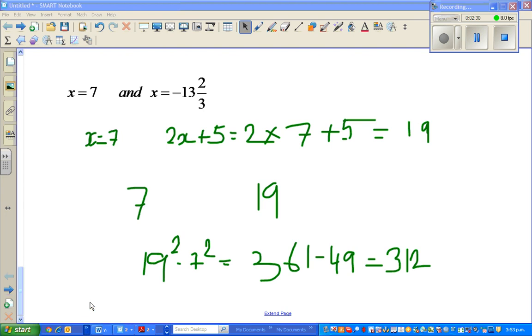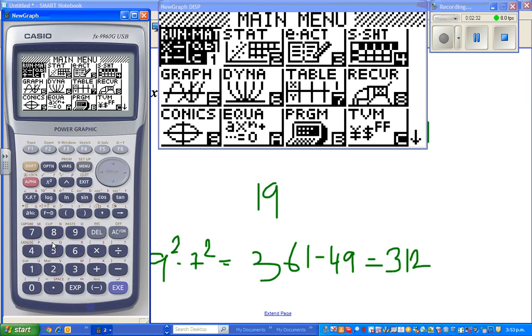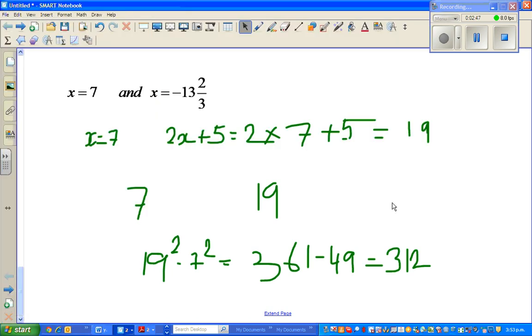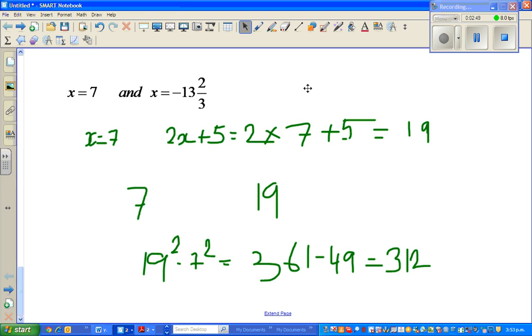So 19 squared minus 7 squared, that should give me 312. And there we go. The answer is 312. So this is how you can confirm that these are the two answers.